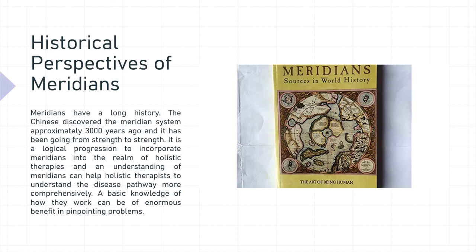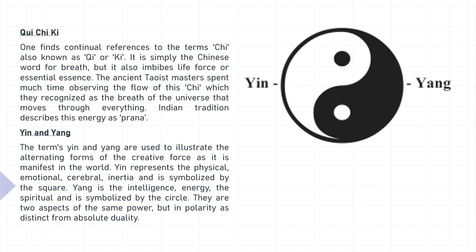One finds continual references to the term Qi — also known as Chi or Ki, as it is sometimes pronounced. It is simply the Chinese word for breath, but it also imbibes life force or essential essence. The ancient Taoist masters spent much time observing the flow of this Qi, which they recognized as the breath of the universe that moves through everything. Indian tradition describes this energy as prana.